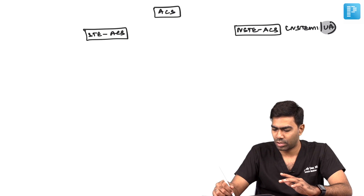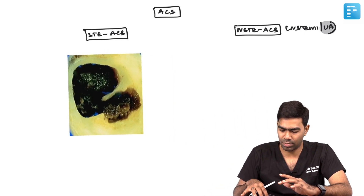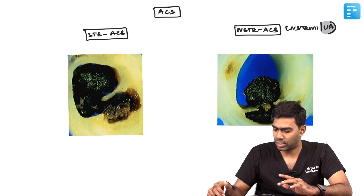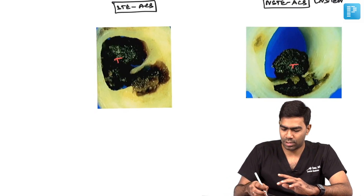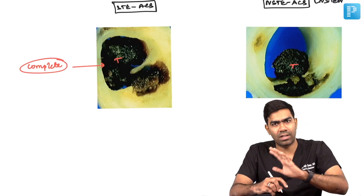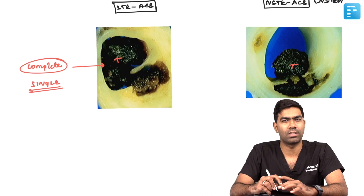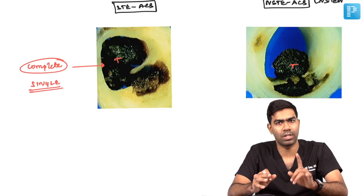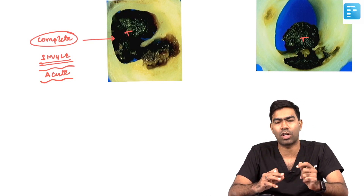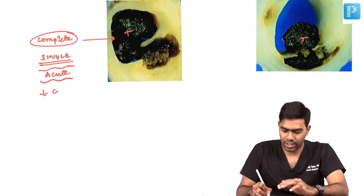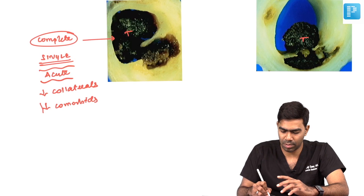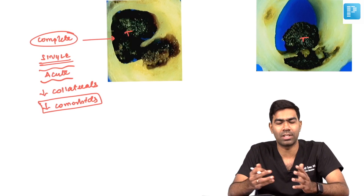What is the basic difference between STACS and NSTACS? An image illustrates what is happening. The thrombus in STACS shows complete, near-100% occlusion. It typically involves a single vessel, presents acutely and dramatically within hours, leaving no time to develop collaterals. Classically, these patients tend to have fewer comorbidities, though this is variable.